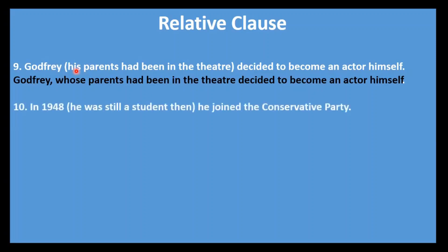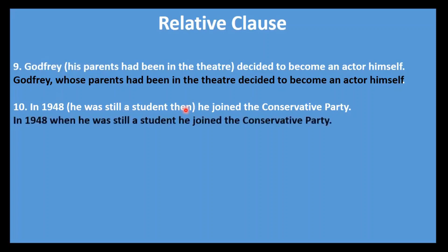Finally, question number ten: In 1948 — (he was still a student then) — he joined the Conservative Party. 1948 is a date, which stands for time. The word 'then' in the bracket refers to 1948, and we replace 'then' with the relative pronoun 'when.' Answer: In 1948, when he was still a student, he joined the Conservative Party.